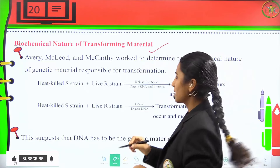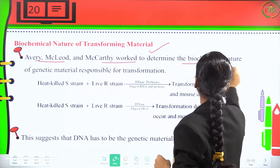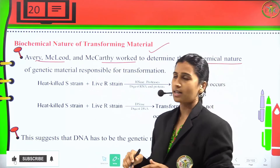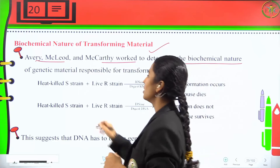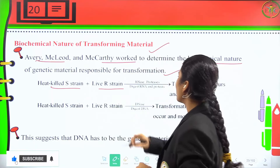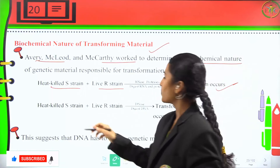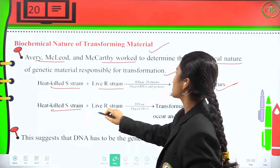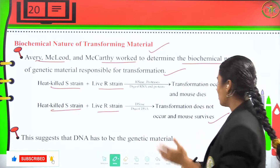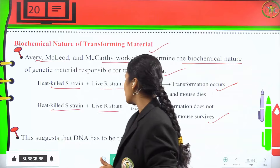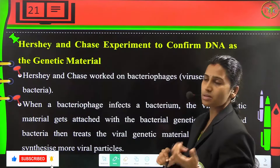Avery, McLeod, and McCarty worked to determine the biochemical nature of the genetic material responsible for this transformation. When heat-killed S-strain plus live R-strain were combined with DNA intact, transformation happened and the mouse died. When the DNA was destroyed, transformation did not happen and the mouse survived — suggesting that DNA is the genetic material responsible for transformation.